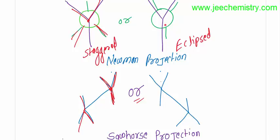Now, in this second case, the front carbon has two bonds in the upward direction and one in the downward direction. The back carbon also has two in the upward direction and one in the downward direction. In this third format, two will be in the downward direction and two will be in the upper direction.